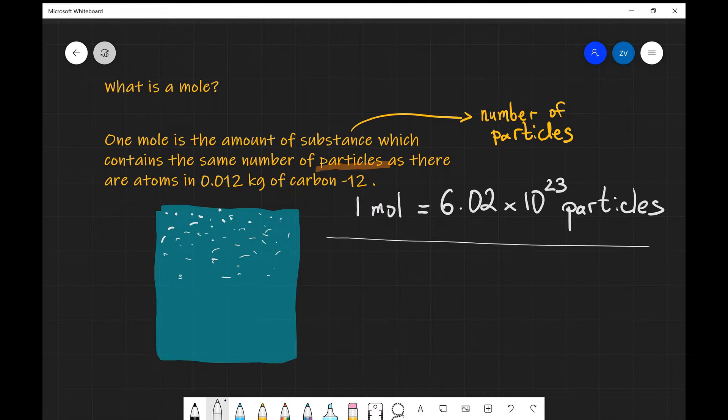This is a constant. And this is known as Avogadro's constant, which is normally given the symbol Na, and that is equal to 6.02 times 10 to the power of 23 moles to the power of minus 1.